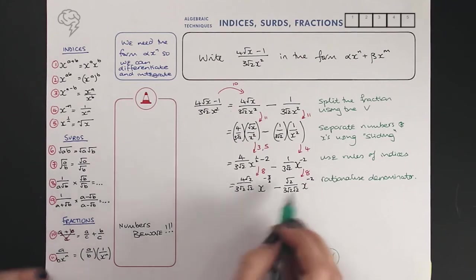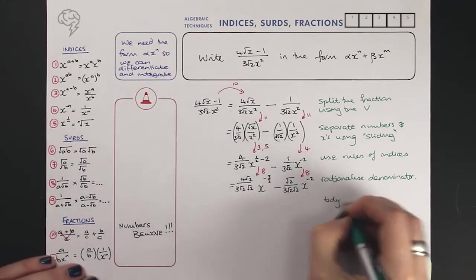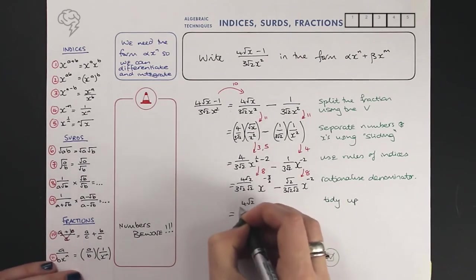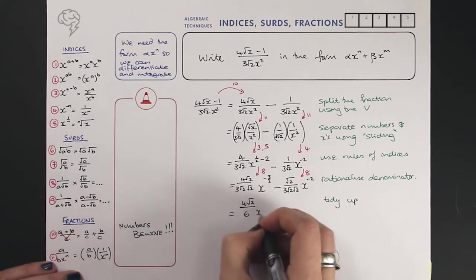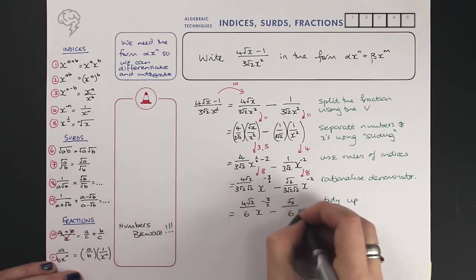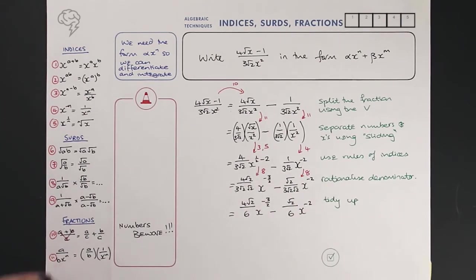Nearly done. I just want to tidy this up a little bit and see what I'm dealing with, so just tidy up. We've got four root two over three times two is six, and then we've got root two over three times two is six.